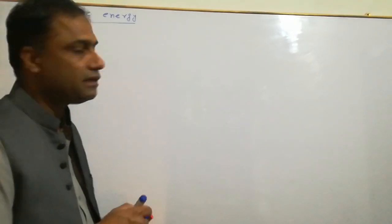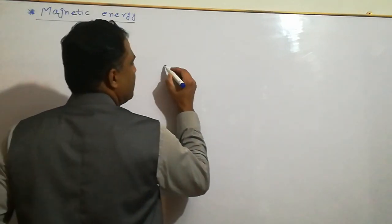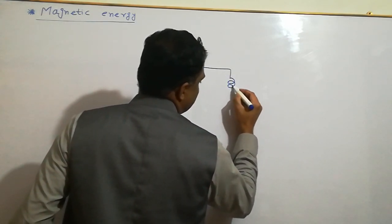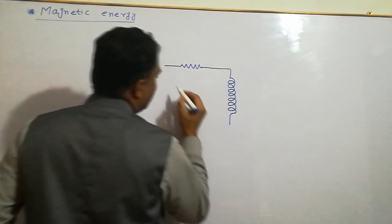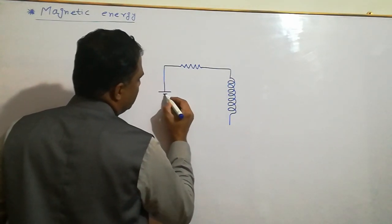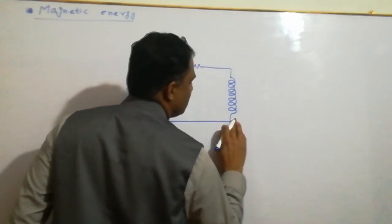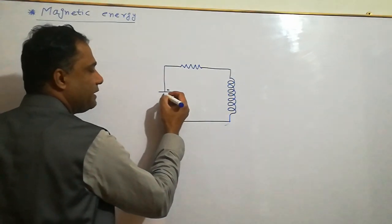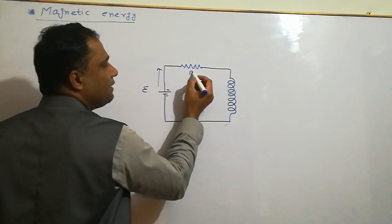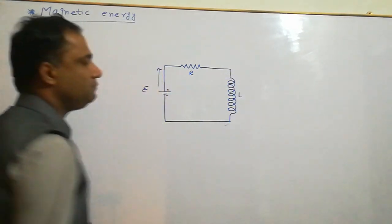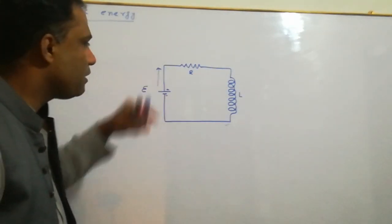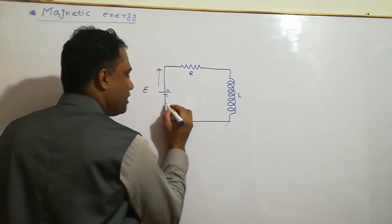Let us consider a circuit in which we have a resistor R and an inductor of value L, and here we have a battery with EMF equal to E. This is the positive terminal and the negative terminal of the battery. We have conventional current flow. This is an RL circuit with current I flowing.